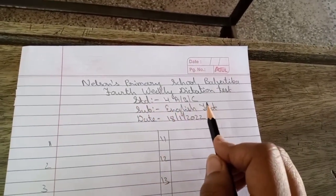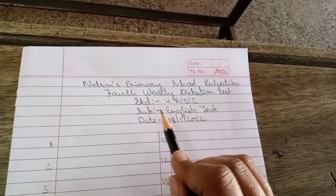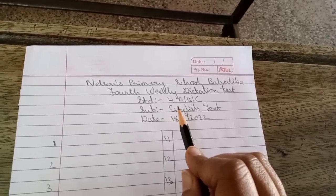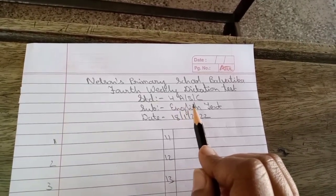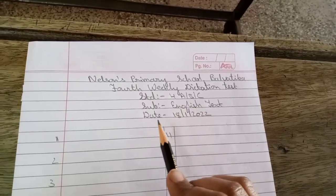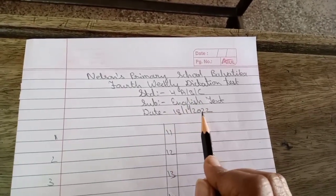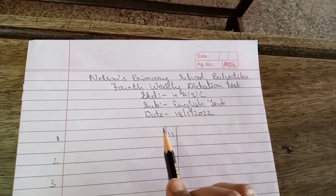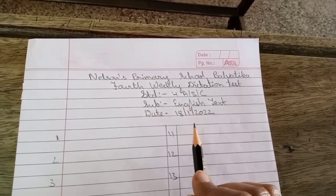Then standard four. If you are A, then A you will write. If you belong to B class, then B. If you are from C, then C you will write. Then subject, you will write English text. Then date, you will write today's date: 18/1/2022.